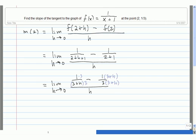Now let's write out what we have. The numerator now becomes 3 divided by 3(3+h), minus (3+h) divided by 3(3+h), and we still have that divided by h.